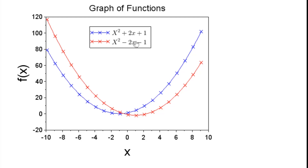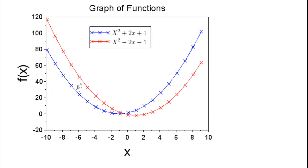In this video we will make two graphs of functions. Our first function y is x squared plus 2x plus 1, and the second function will also be shown. We will learn how to define the x variable, define functions, get function values, plot them, change colors and line styles, change font sizes of the x-axis label, y-axis label, and figure title.